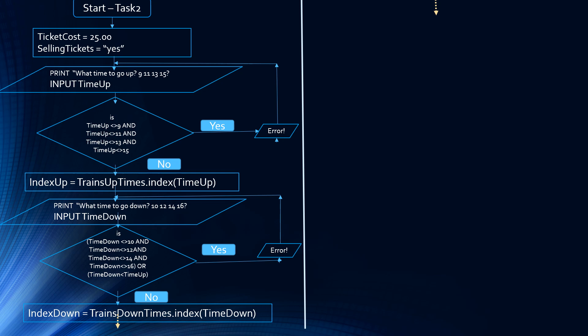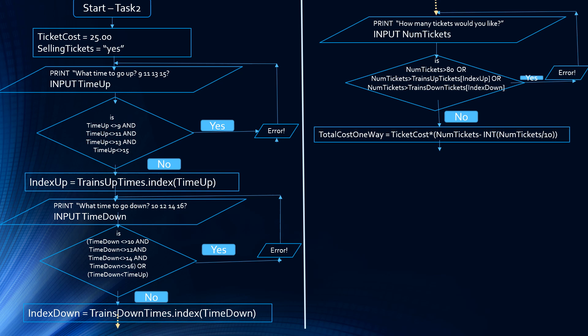If the answer is no, we're going to extract index down. Then we input the number of tickets — we print a message: how many tickets would you like? Input number of tickets. We have a decision diamond to validate: is number of tickets greater than 80, or number of tickets greater than trains up tickets of index up, or number of tickets greater than trains down tickets of index down? If yes, then the user is asking for too many tickets, so we put an error message.